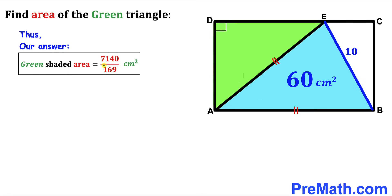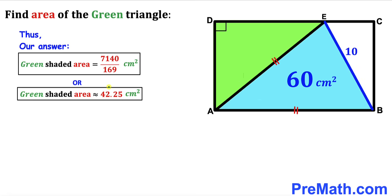The area of the green shaded triangle ADE is 7140/169 cm², which is approximately 42.25 cm². That's our final answer. Thanks for watching — please don't forget to subscribe to the channel for more exciting videos!